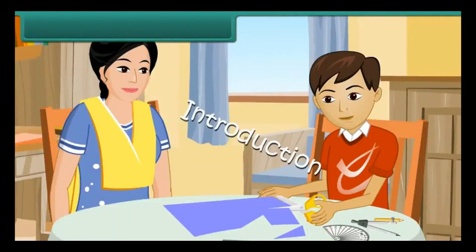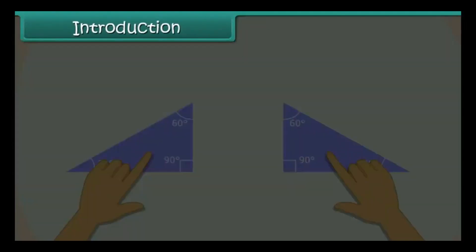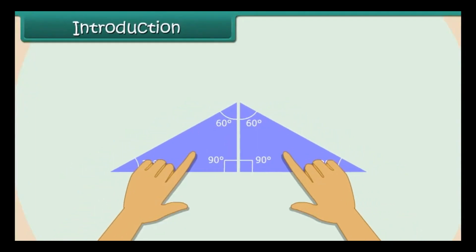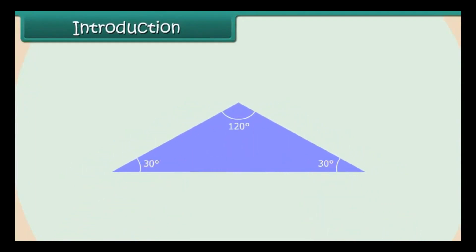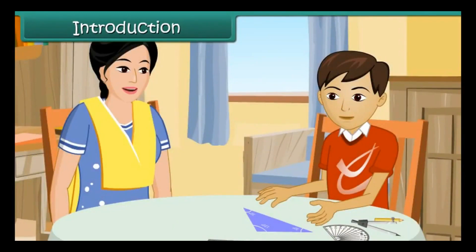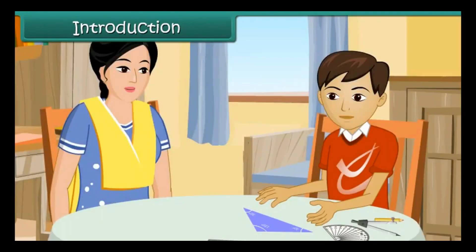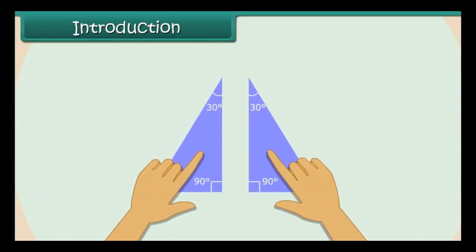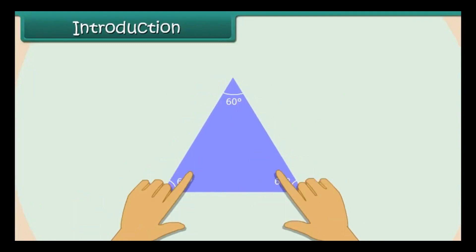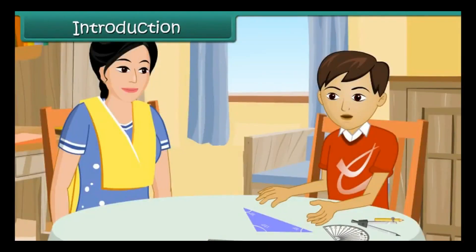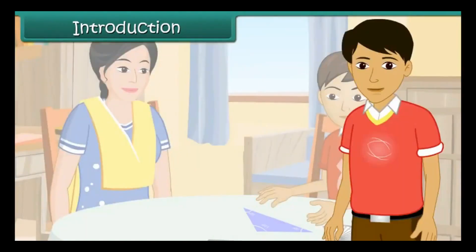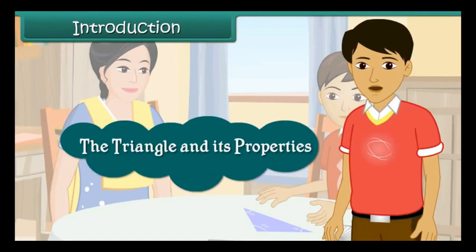Mom, look! I made a new triangle by joining two identical right-angled triangles. Two sides and two angles are equal. Nick also joined two right-angle triangles to create a new triangle with all sides and all angles equal. In this lesson, you will learn about the triangle and its properties.